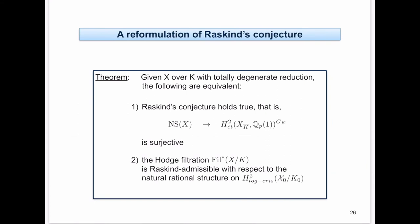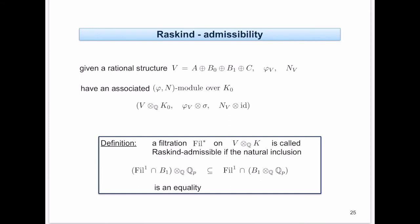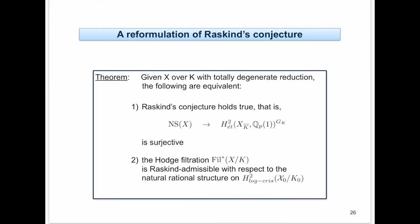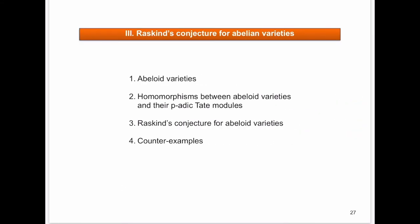We have a translation of Raskind's conjecture to a question about the interplay of Q-vector spaces with Q_p-vector spaces which are naturally contained in each other, but the question is: are they always equal? This is closely related to questions in variational Tate conjectures — are results true tensored with Q, or also with Q_p? We started looking at examples, specifically abeloid varieties over p-adic fields with totally degenerate reduction.